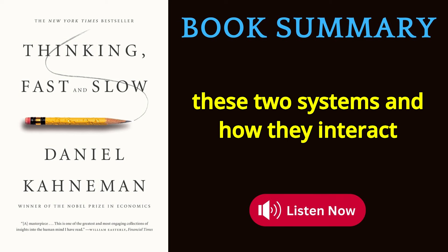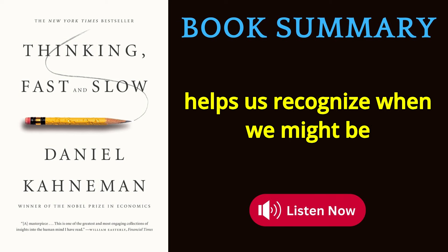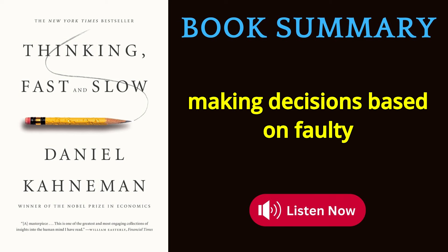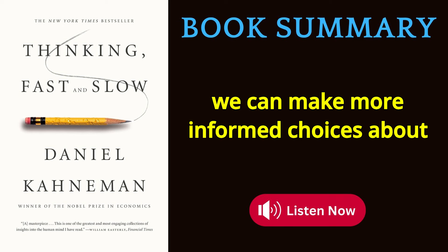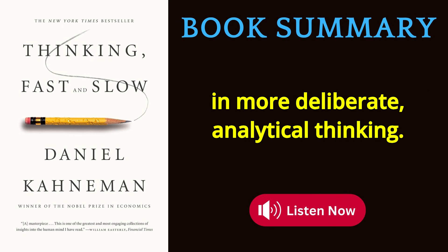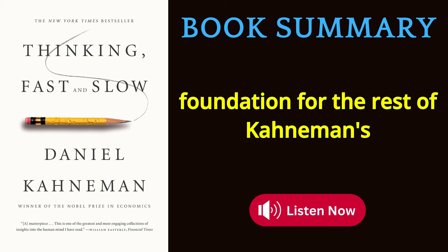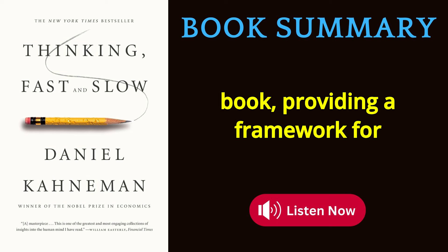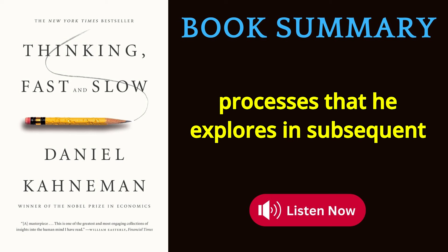Understanding these two systems is crucial, Kahneman argues, because it helps us recognize when we might be falling prey to cognitive biases or making decisions based on faulty intuitions. By being aware of when we're relying on System 1 versus System 2, we can make more informed choices about when to trust our gut and when to engage in more deliberate, analytical thinking. This concept of two systems forms the foundation for the rest of Kahneman's book.